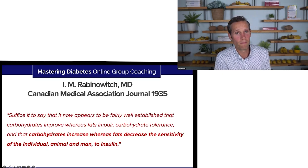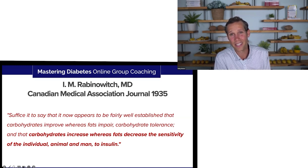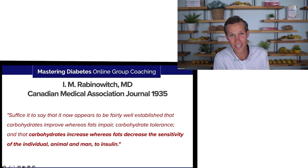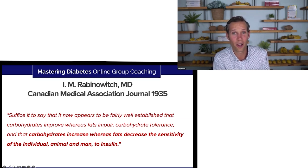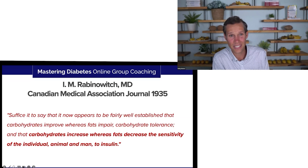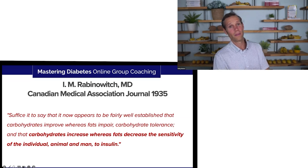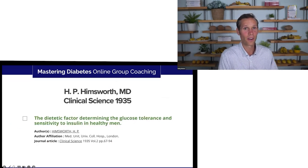And this quote really says it all — and this is just from 1935. We've known this, and somehow this information has gotten lost: 'Suffice it to say that it now appears to be fairly well established that carbohydrates improve, whereas fats impair carbohydrate tolerance, and that carbohydrates increase whereas fats decrease the sensitivity of the individual, animal, and man to insulin.' We saw this in 1935.